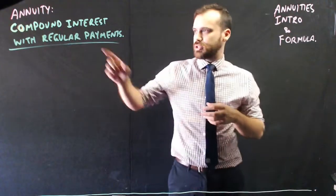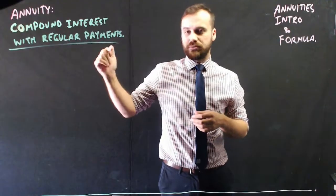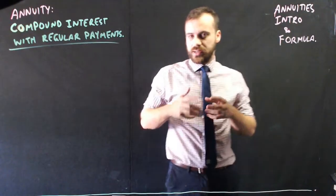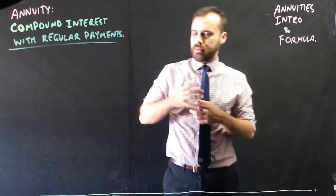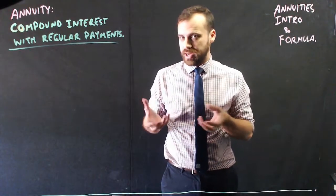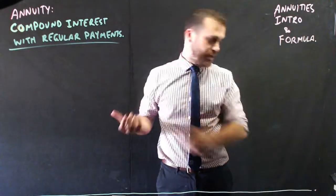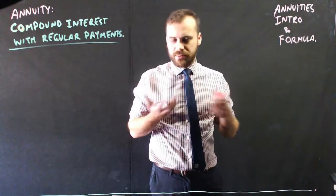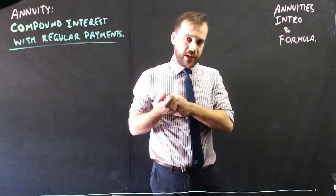What's an annuity? So it's compound interest with regular payments. Now, there's a lot of different ways this can work, but essentially, when you've done compound interest questions in the past, somebody puts money in the bank, and then they wait some amount of time, and then they pull the money back out of the bank.